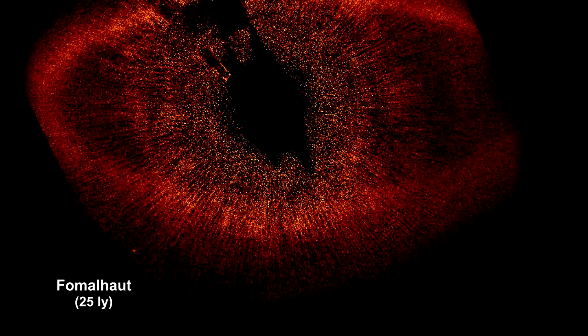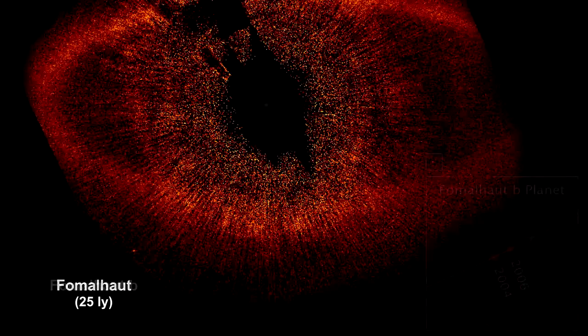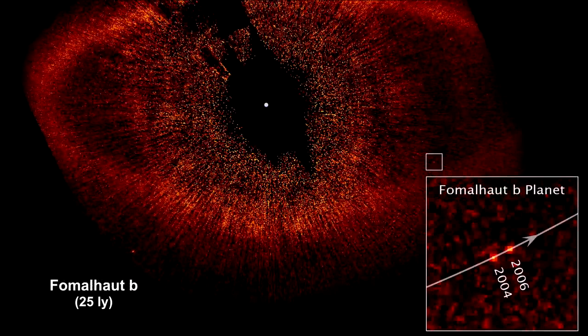The star Fomalhaut is a good example of this process. Its circumstellar disk morphed into a protoplanetary disk with at least one object large enough to be considered a planet, Fomalhaut b.